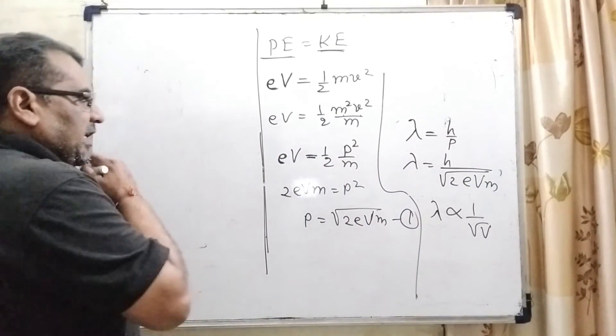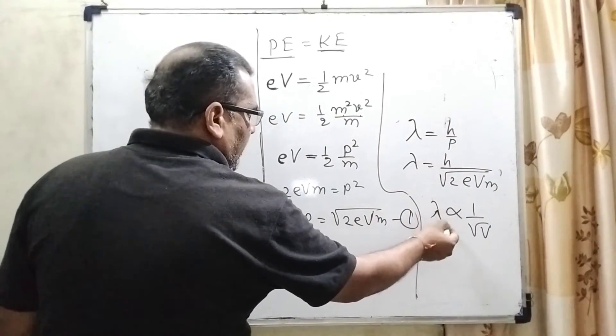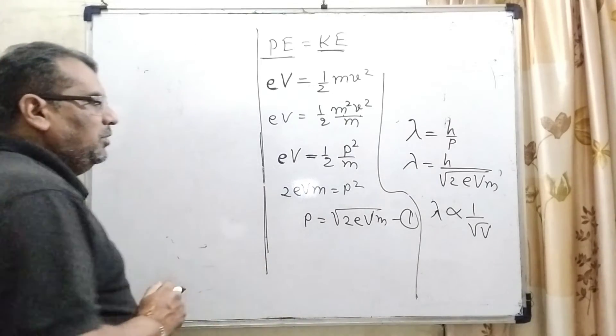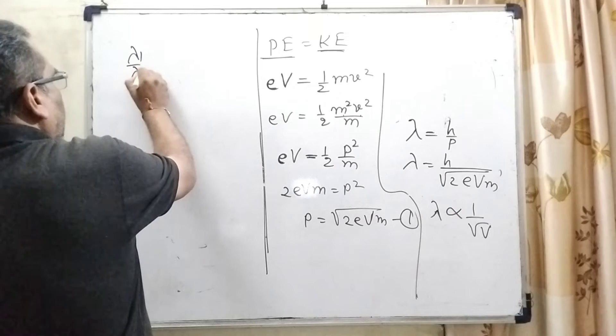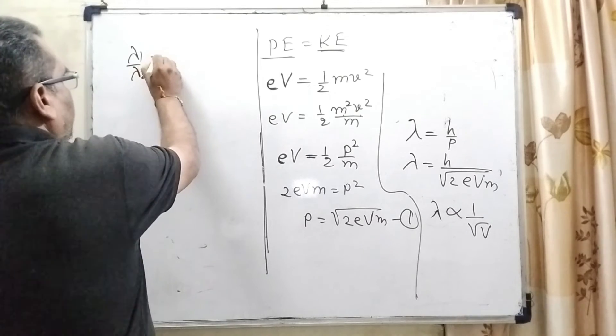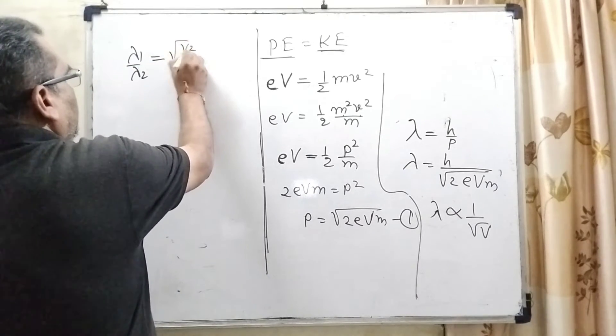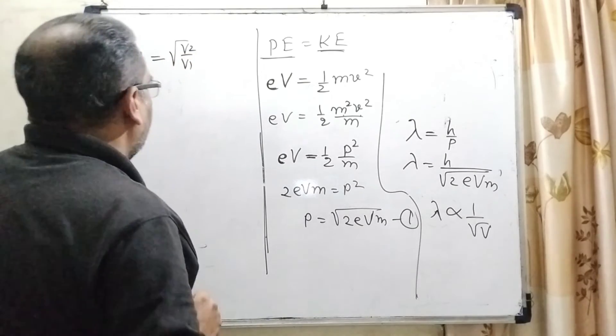Since the wavelength λ is inversely proportional to √V, we can write λ₁/λ₂ = √(V₂/V₁).